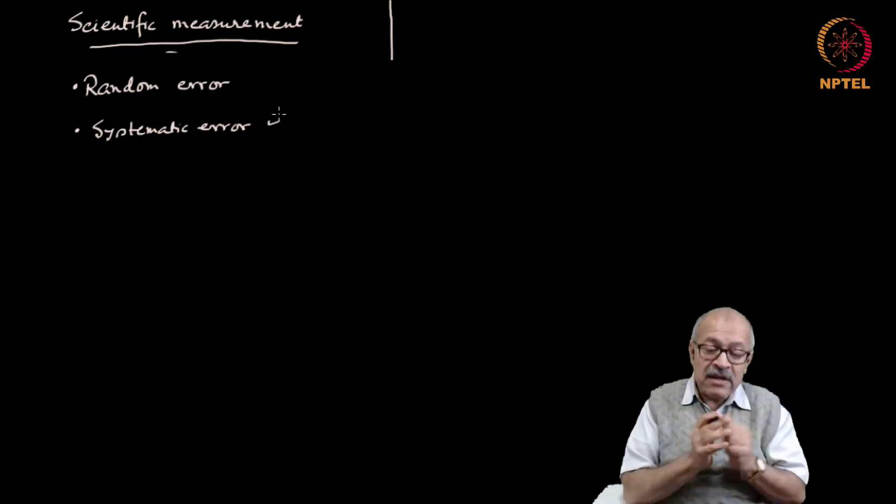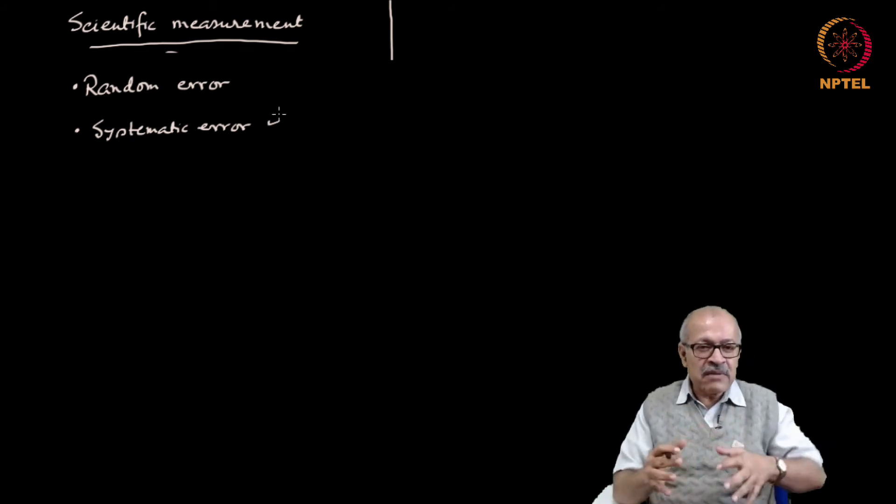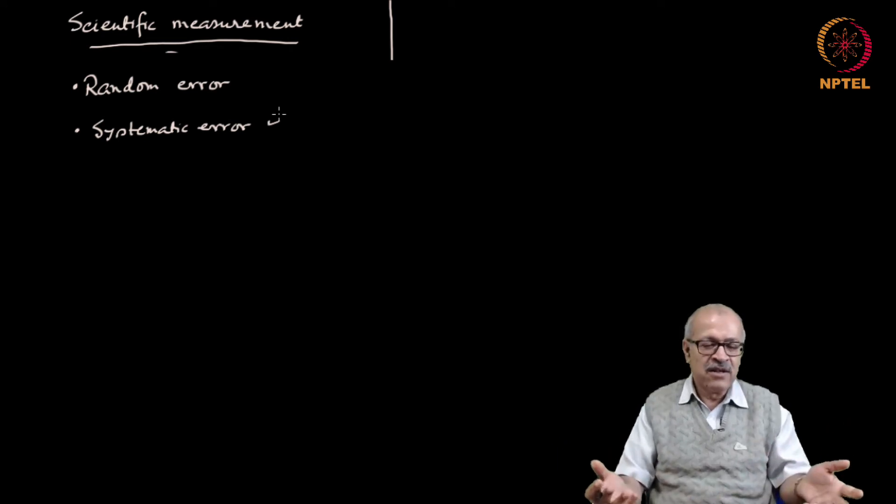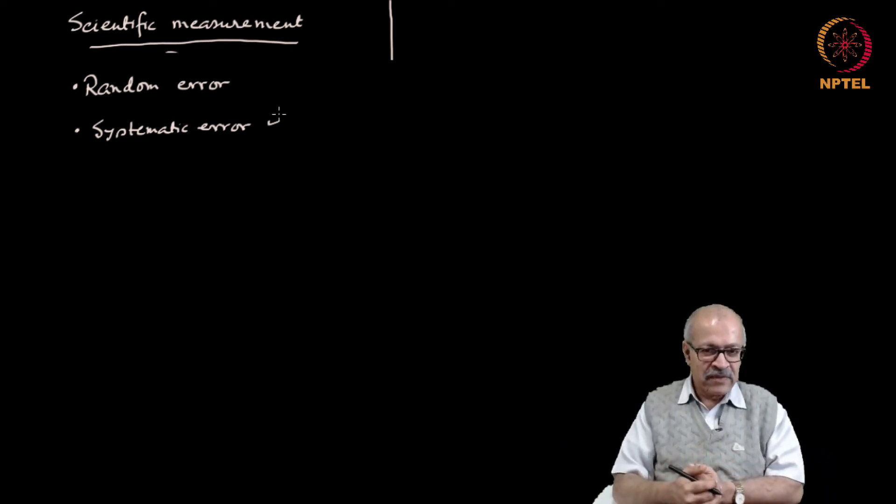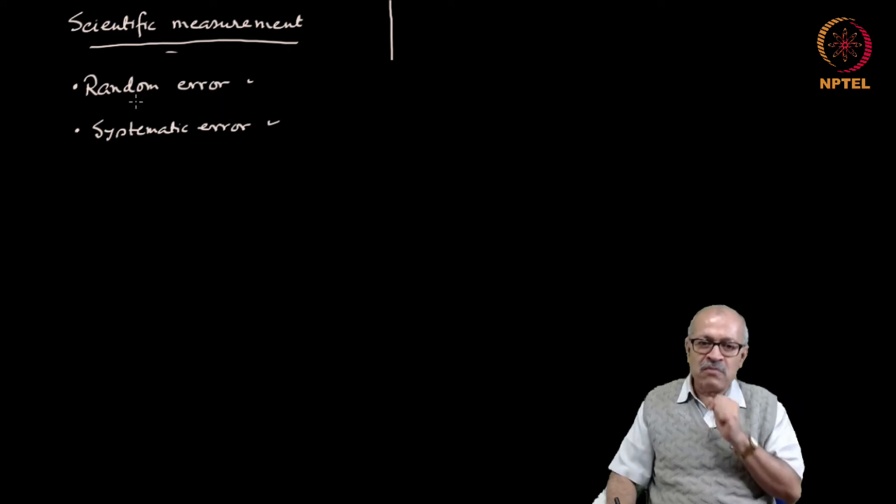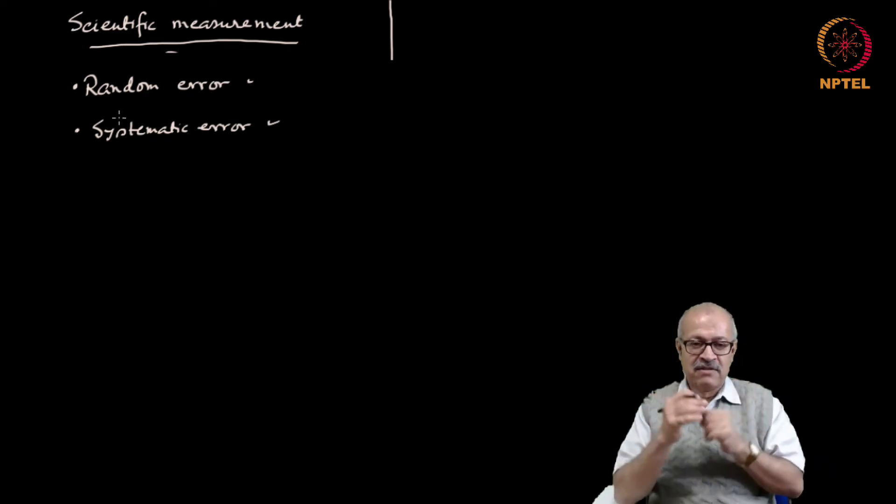Because if a systematic error remains then the results will definitely be wrong. But random errors generally cannot be avoided. Random errors happen because of thermal fluctuations and effects like that which are not within our control. Therefore a scientist has to learn how to sort of take stock of the random errors. So systematic errors can be eliminated, but random errors normally cannot be eliminated. So a scientist has to learn to live with random errors.